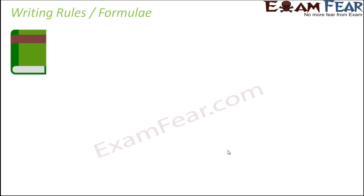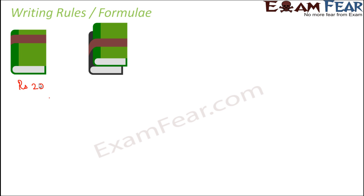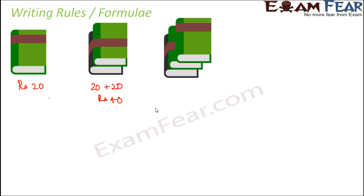Let's say the cost of one book is rupees 20. So what would be the cost of two books? Obviously, one book is 20, so two books would be 20 plus 20, that is rupees 40. What about the cost of three books? It would be 20 plus 20 plus 20, or 20 multiplied by 3, because there are 3 books — so this would be rupees 60.